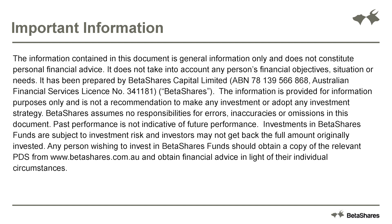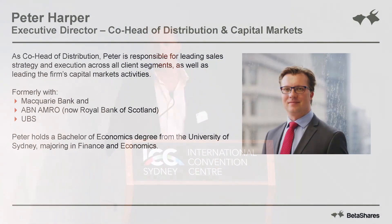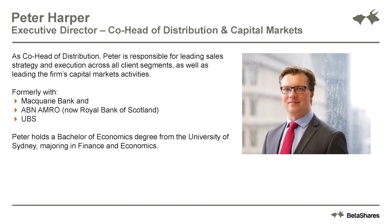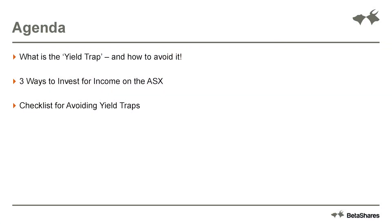My background briefly: my role within BetaShares is co-head of distribution and head of capital markets, which is a function in our business that assists investors to access best liquidity and execution in our exchange traded funds. What we're going to cover today is a few different things: first, what is the yield trap and how to avoid it; we're going to look at three ways to invest for income on the ASX; and we're going to look through a checklist of how to avoid yield traps.